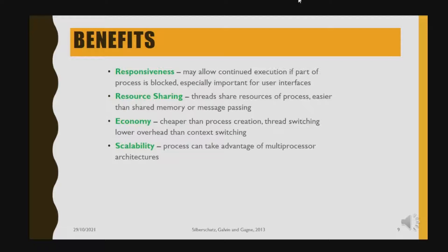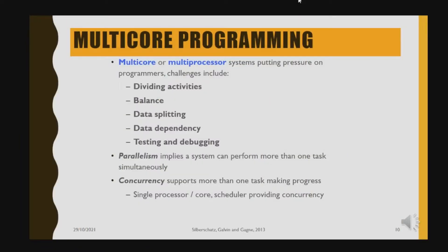In terms of scalability, processes can take advantage of multi-processor architecture. Multi-core and multi-processor systems put pressure on programmers, with challenges including dividing activities, balancing work, splitting data, handling data dependency, and testing and debugging. Parallelism implies the system can perform more than one task simultaneously, while concurrency supports more than one task making progress — a single-core scheduler provides concurrency.